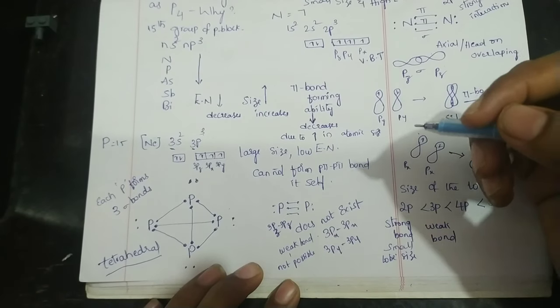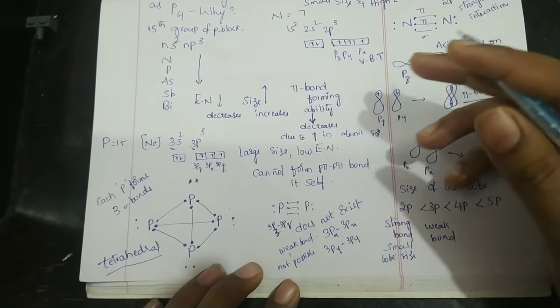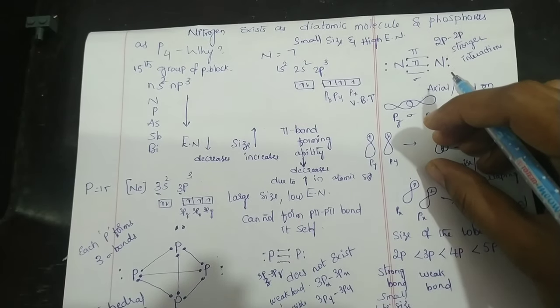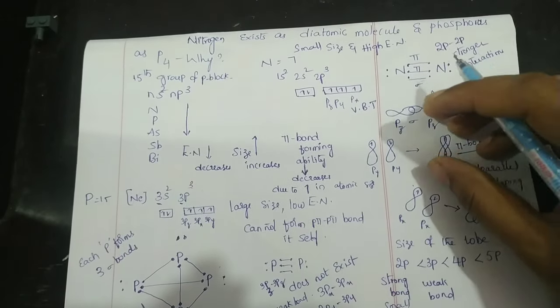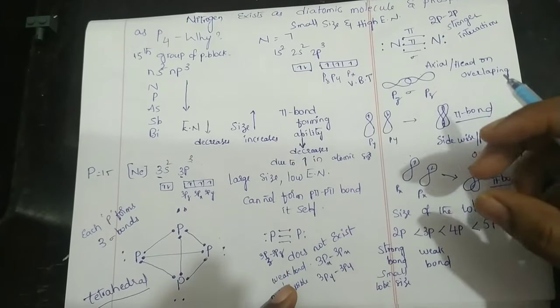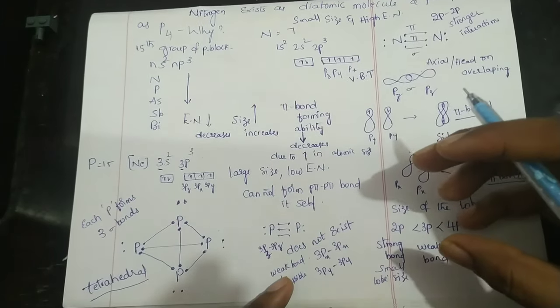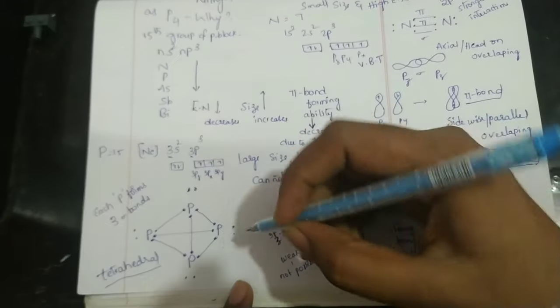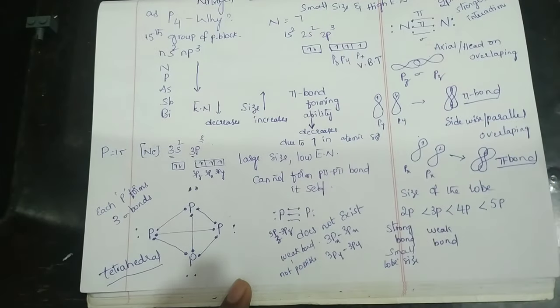We can conclude that nitrogen atom is small in size and easily forms triple bonds with other nitrogen atoms, forming N2 molecules. But phosphorus is large in size and forms single bonds with other phosphorus atoms in the P4 molecule.